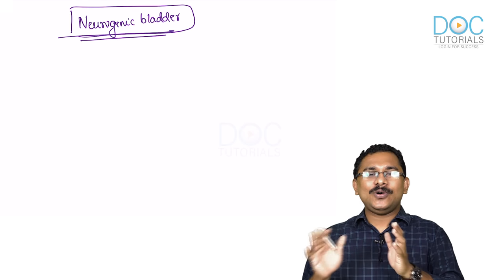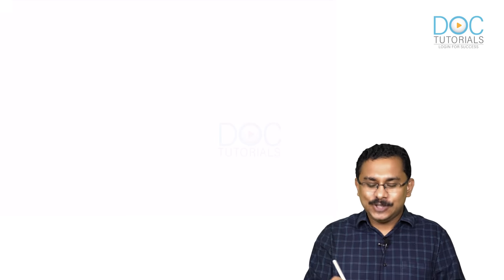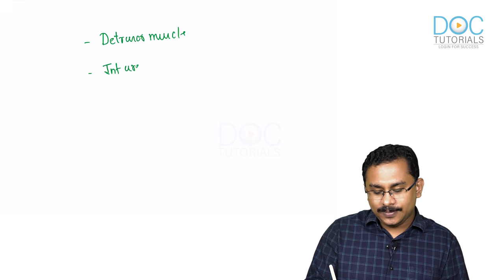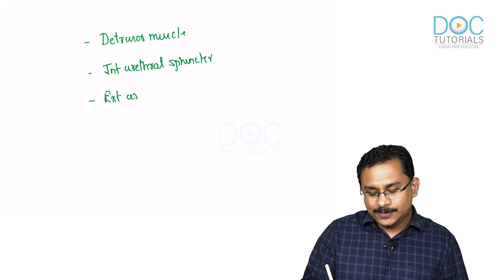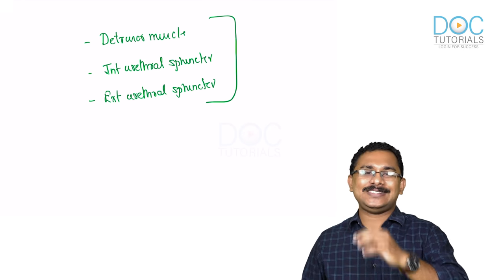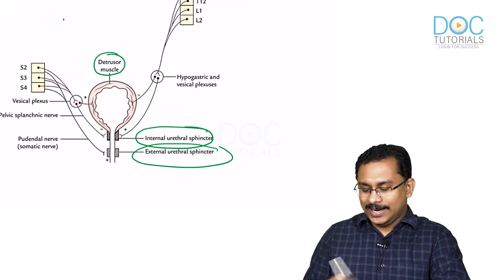Let us conceptually understand this topic. We will briefly cover the clinically relevant anatomy and physiology. There are three important structures in the bladder: one is the detrusor muscle, the second is the internal urethral sphincter, and the third is the external urethral sphincter. These are the three most important parts of the bladder.